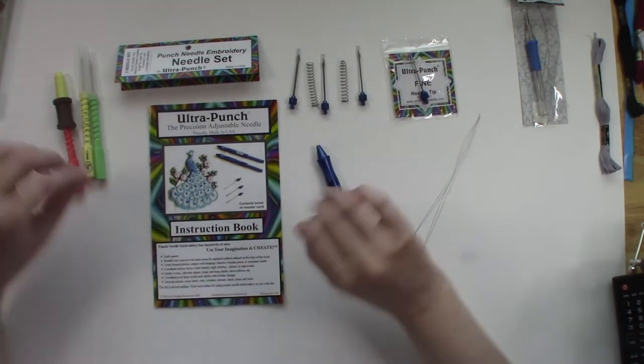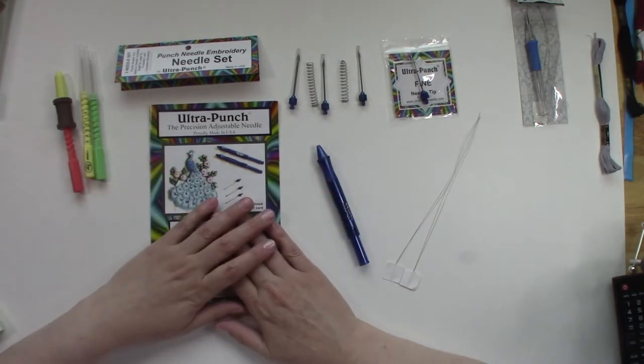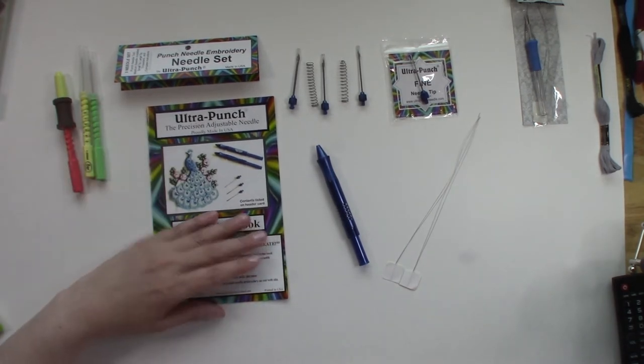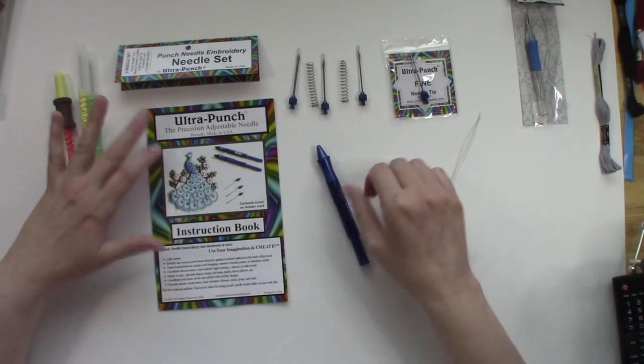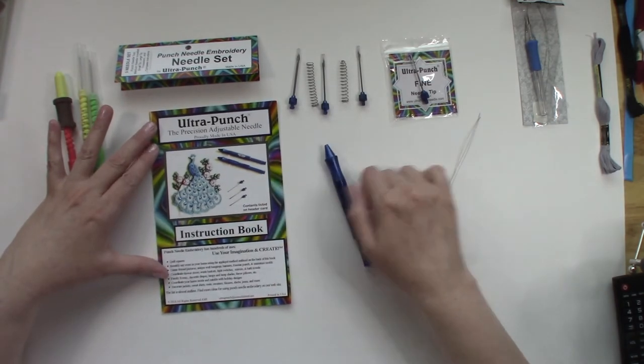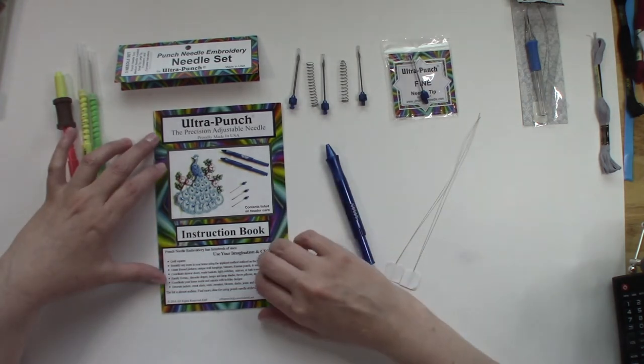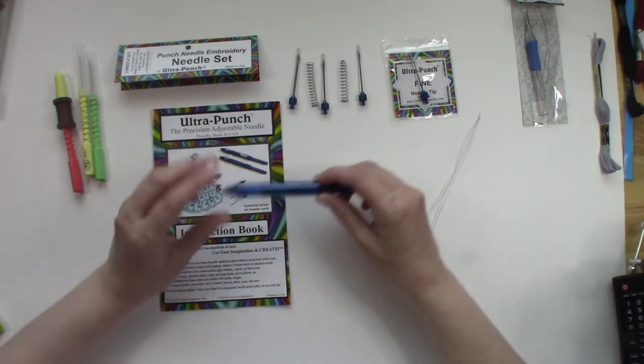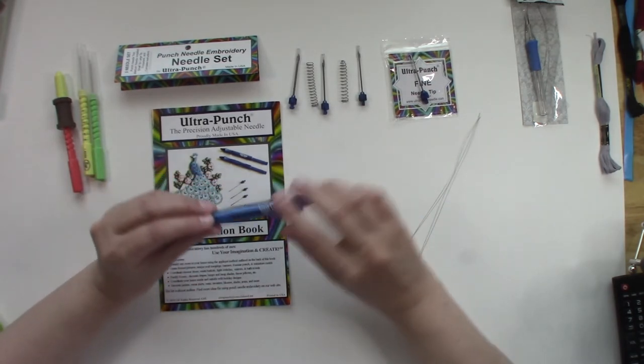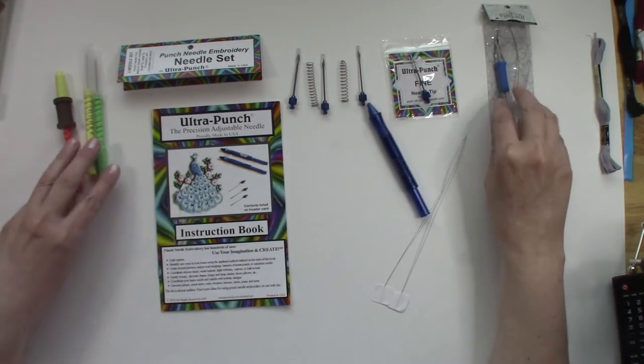We are going to do something different. This is an ultra punch embroidery needle set. This is a trademarked name for this particular set. I believe this was the original ultra punch set, I could be wrong on that, but this is a patented set. They do make others and I will get into those in just a moment.